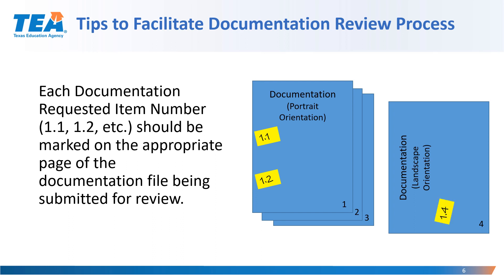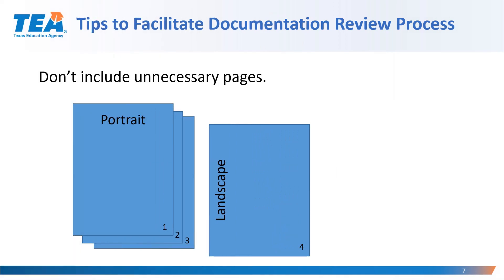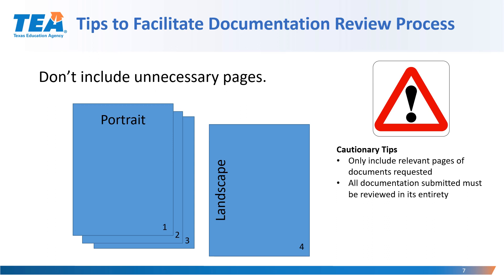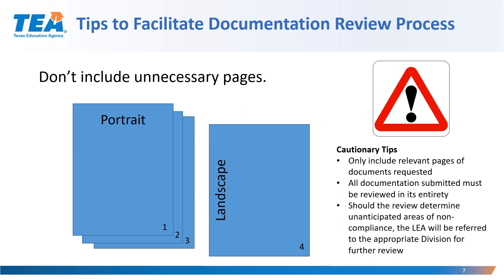On page 4, there's information related to item 1.4 and the LEA has indicated it on page 4. Another tip for facilitating the documentation review process includes not including unnecessary pages. The LEA should use caution when determining what to submit to TEA for review, and should only include relevant pages of the documents that have been requested. Please note that all documentation submitted must be reviewed in its entirety, and should the review determine unanticipated areas of non-compliance, the LEA will be referred to the appropriate division for further review.